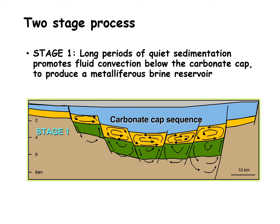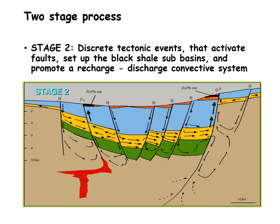SEDEX deposits are thought to form in two main stages. The first stage involves a rift basin where very thick sequences of siliciclastic rocks with some shales accumulate. This is capped by something that acts as an aquitard, which allows connate fluids to develop within the basin, becoming fairly saline. Due to the geothermal gradient they convect within the basin, scavenging metals. The next stage requires discrete tectonic events that reactivate faults, allowing fluids to travel up those faults and discharge on the seafloor, depositing the accumulated metals.